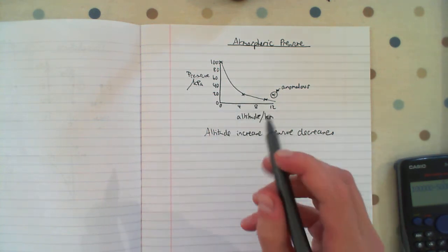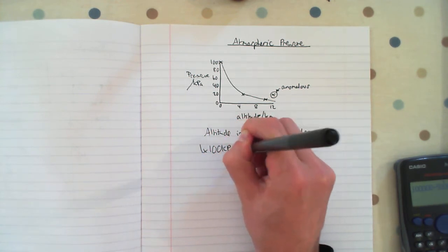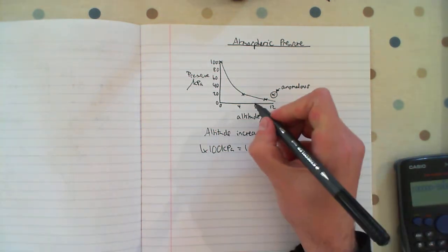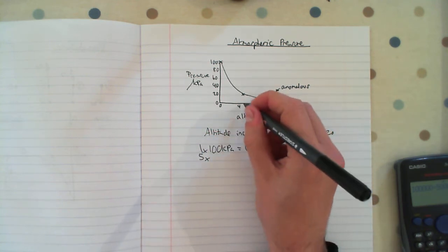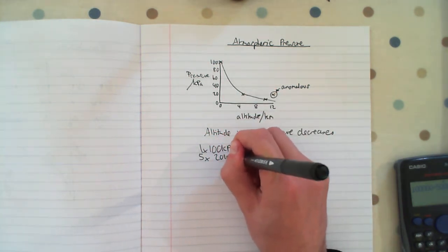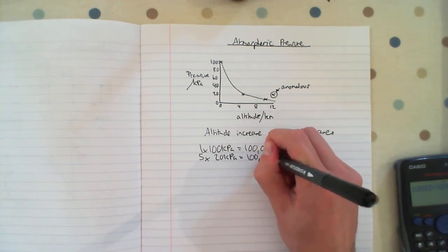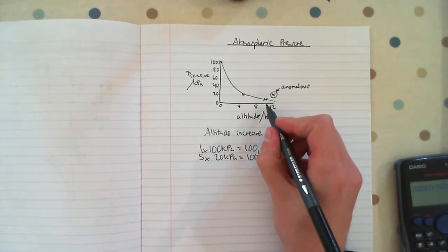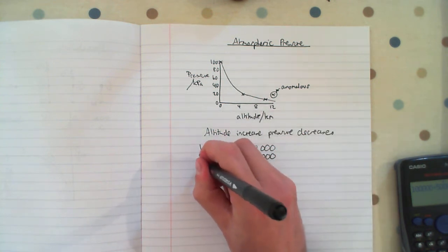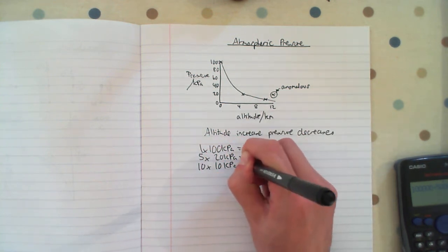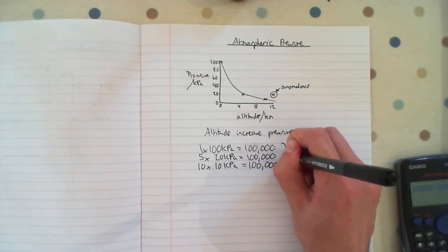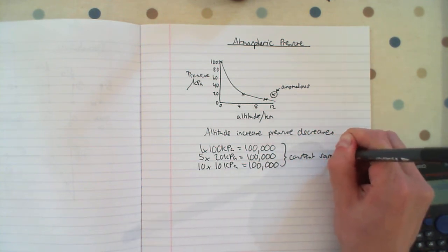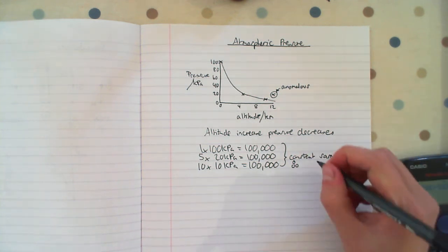So for example here, 1 times 100 kilopascals equals 100,000, a constant of 100,000. Here at 5, 5 times 20 kilopascals equals 100,000. But we need to do it three times to prove that it's correct at all points, not just at two points. Here we've got 10 and 10, so 10 times 10 kilopascals equals 100,000. The constant is always the same. Therefore, it must be inversely proportional.